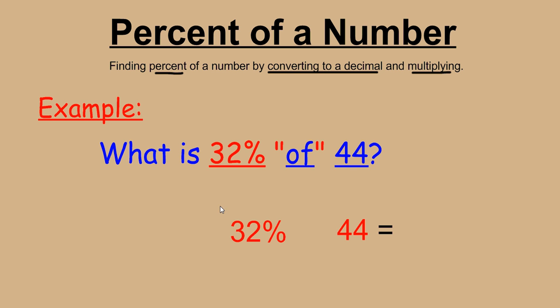Number one, whenever we read this problem, what is 32% of 44? We have to realize what the word "of" tells us to do in math. And the operation for finding 32% of 44 is to multiply. So basically, we're multiplying 32% times 44.